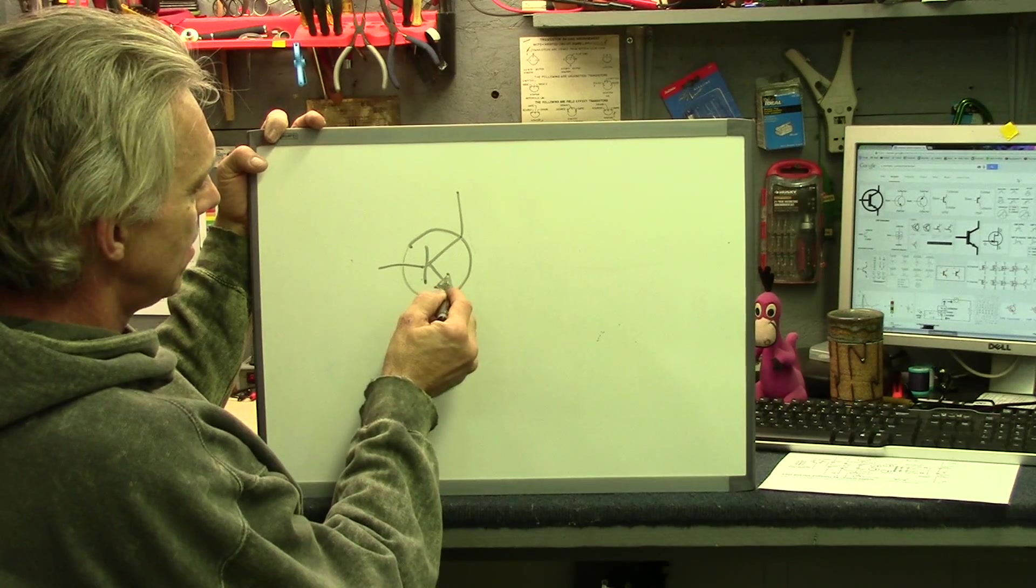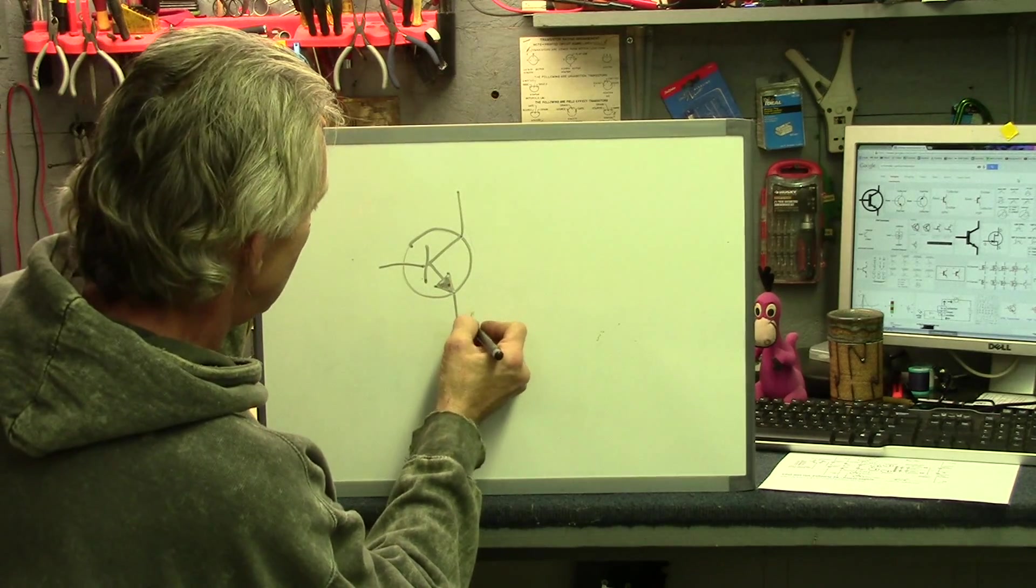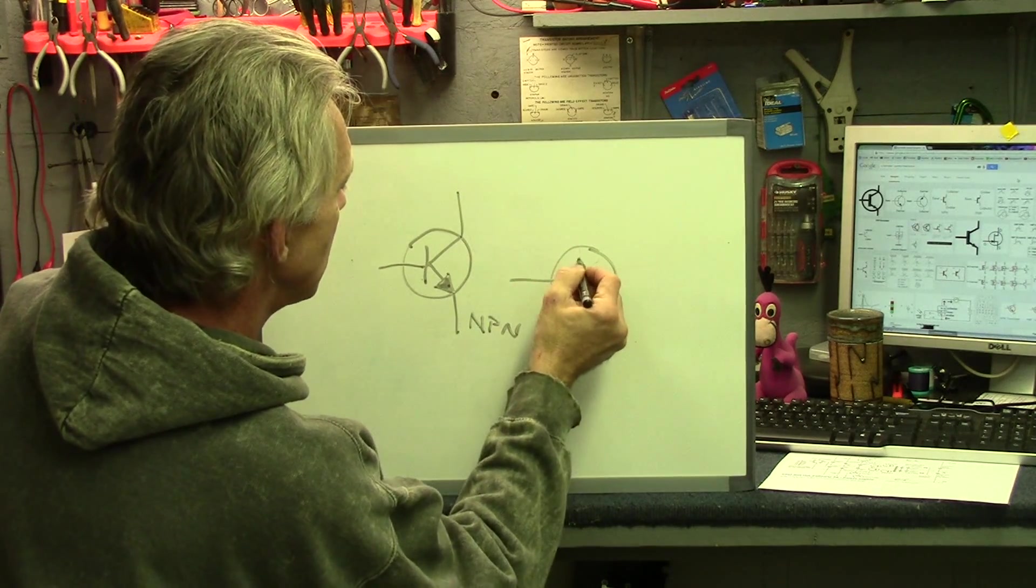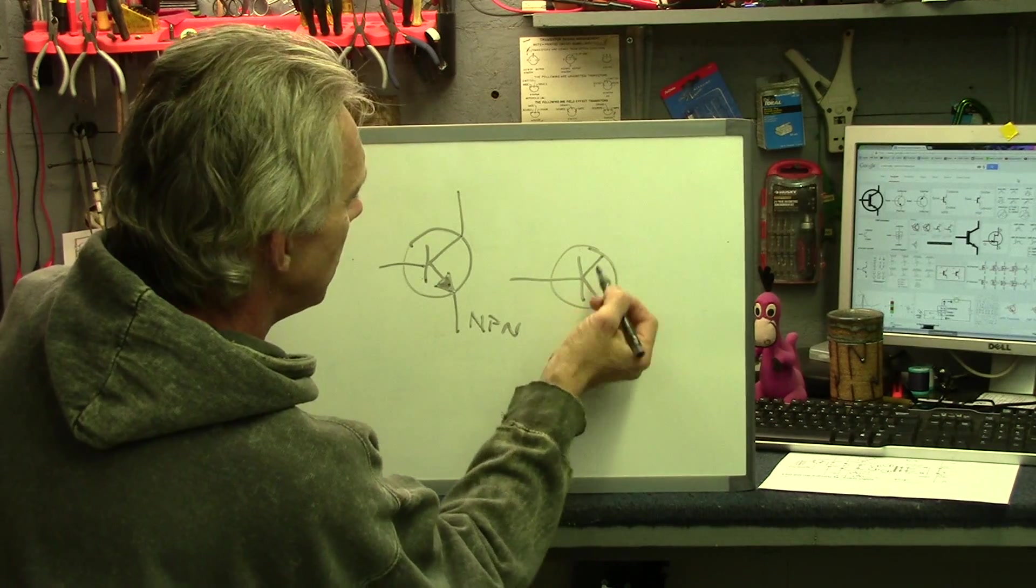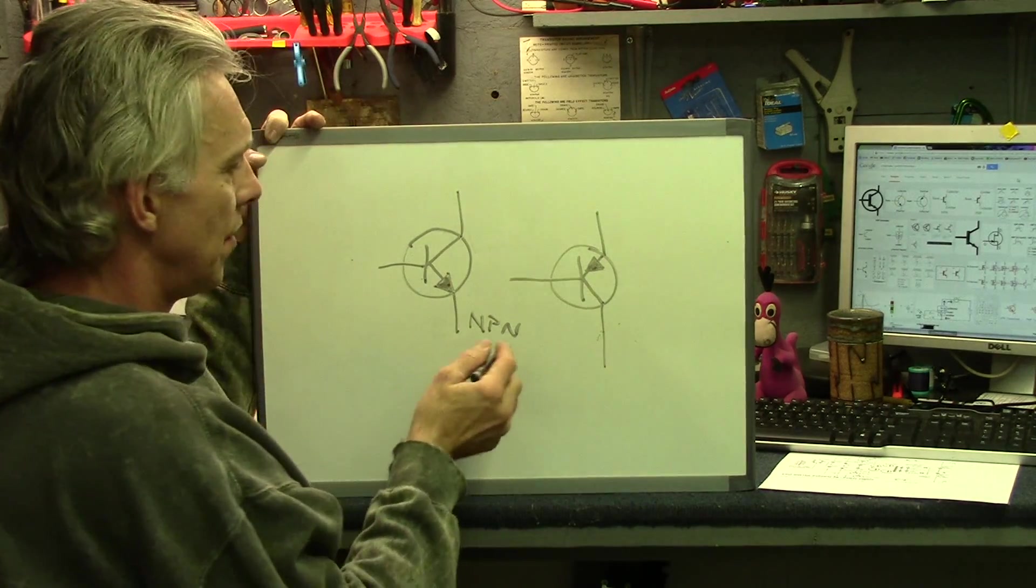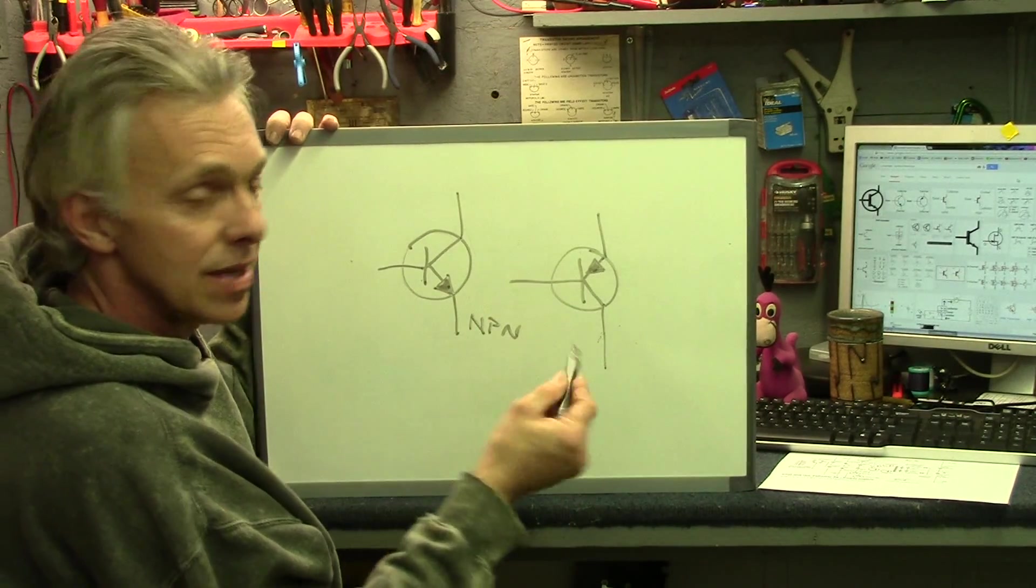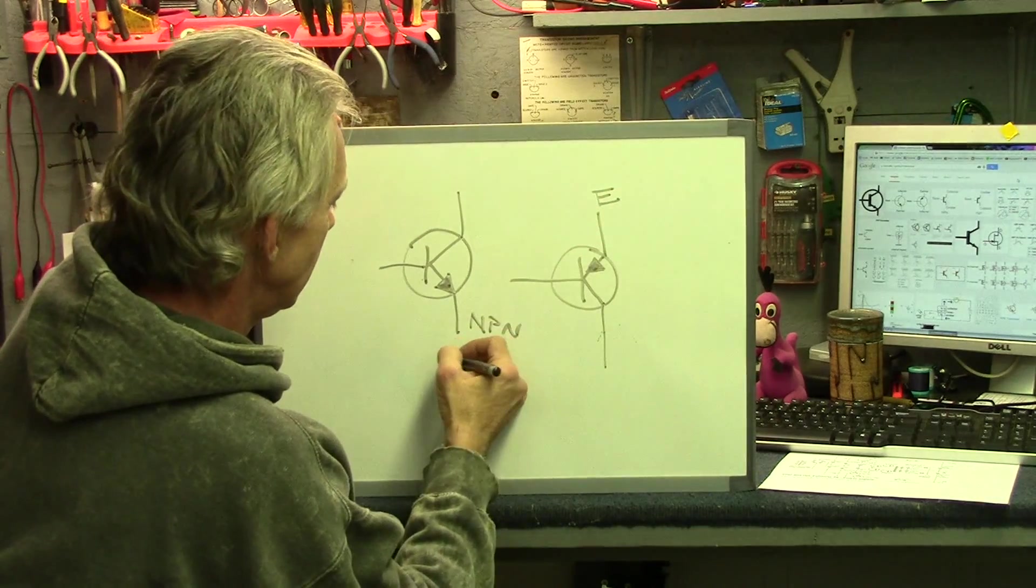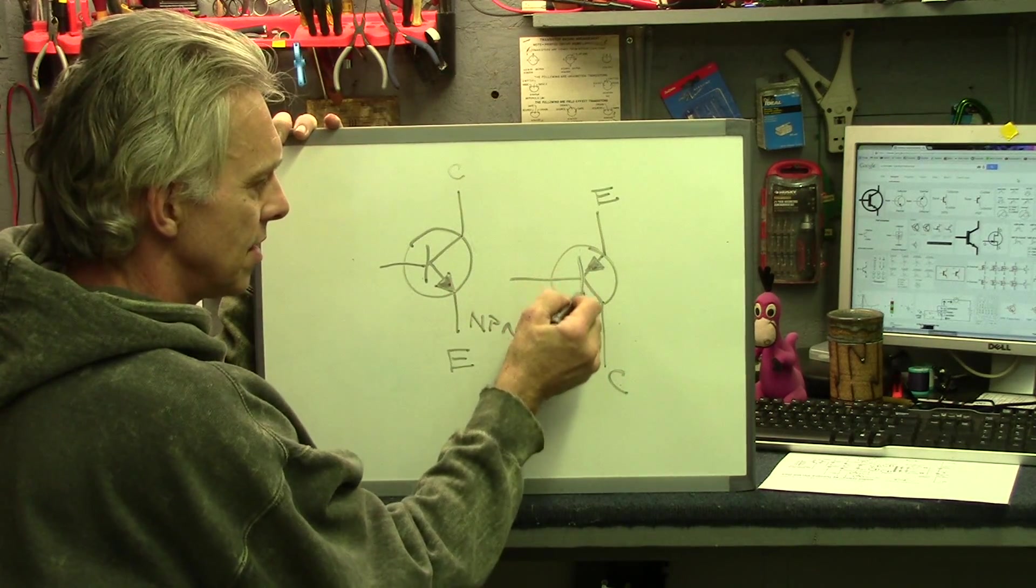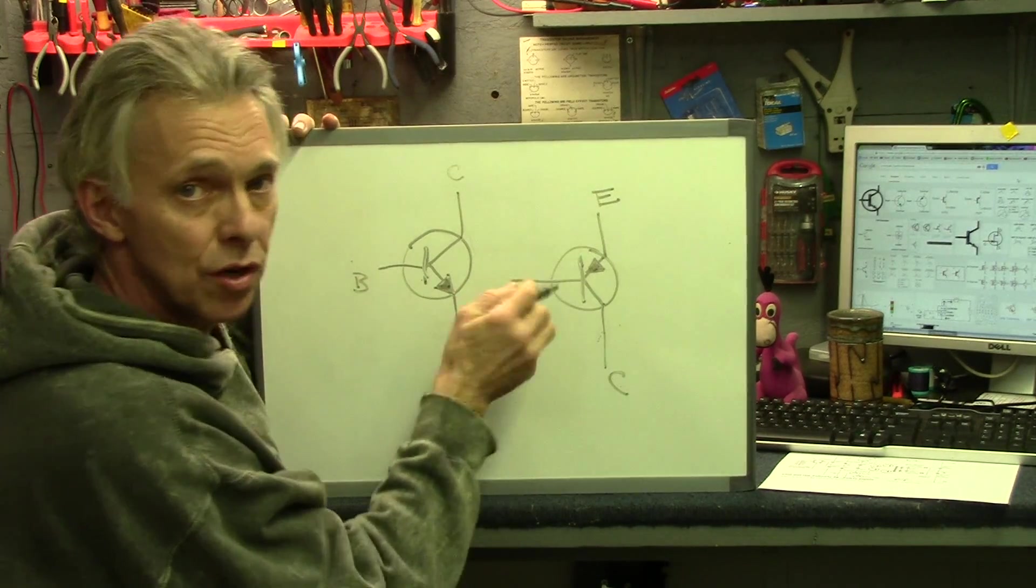The arrows determine what that is. This one, with the arrow pointing out of the circle, is an NPN. A PNP transistor would look almost the same, but it would have the arrow pointing in on this side. Now, there is an emitter, a base, and a collector on a transistor. Where the arrow is, that's always going to be the emitter. The other one, the collector, and the one that leads in here to this plate, that's the base. The base is what turns the transistor on and off.